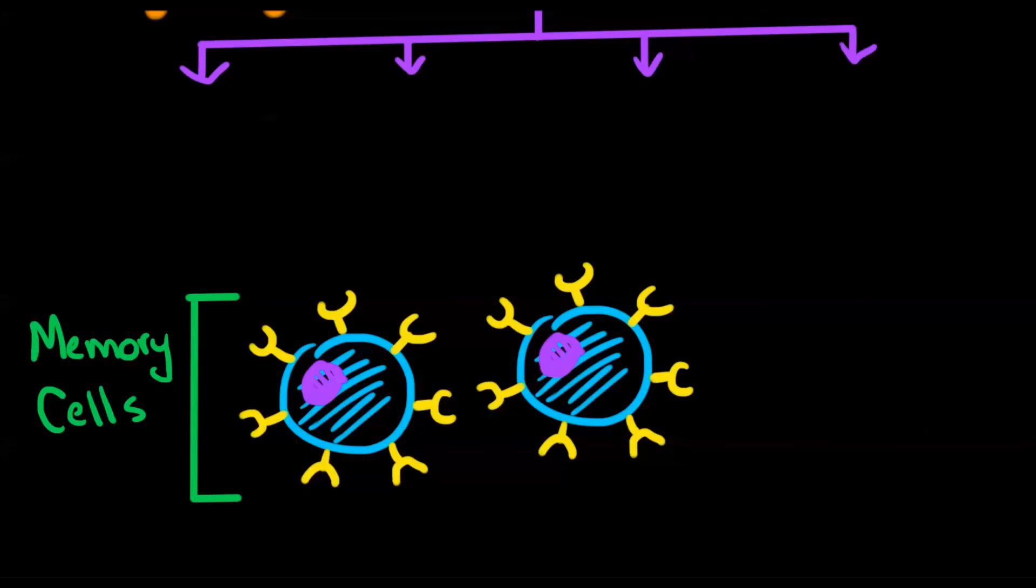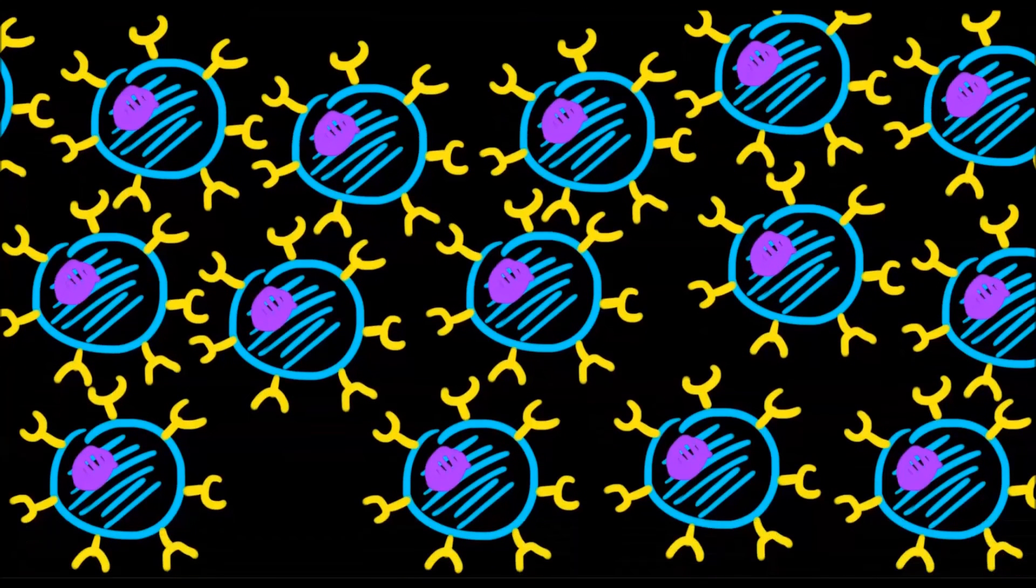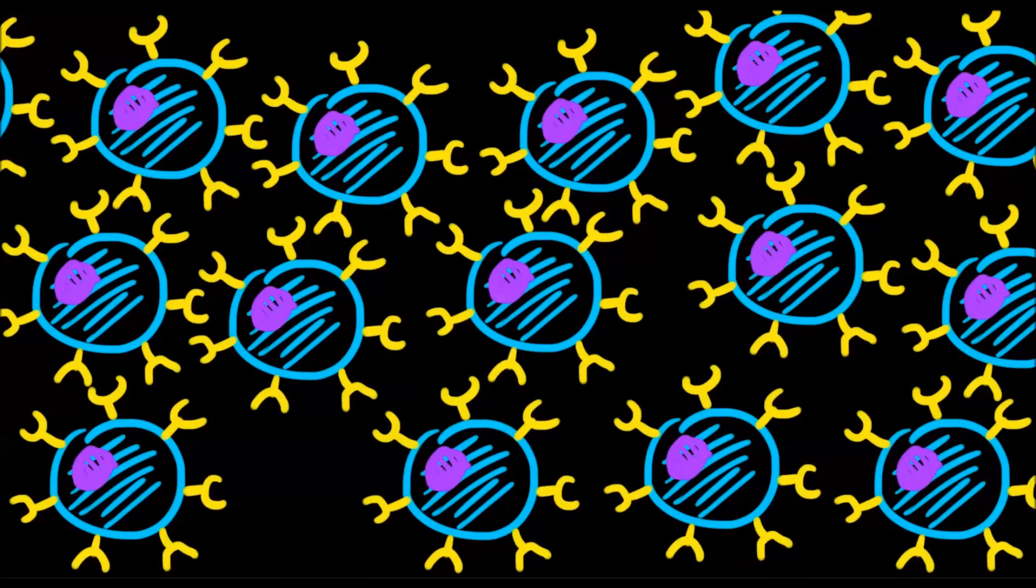The immune cells clear the infection, and memory cells persist. Upon a second, or a third, or fourth exposure, memory cells rapidly divide to produce a strong, rapid response, which often clears the body of infection even before symptoms are felt.